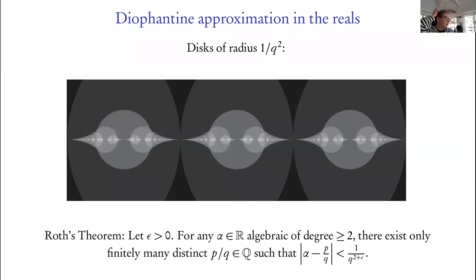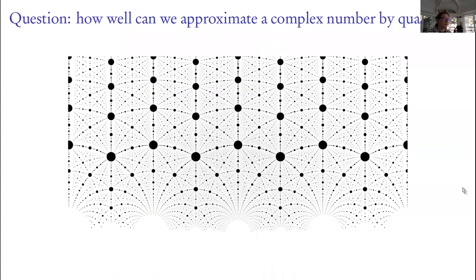Then there's Roth's theorem: asking what happens if you slightly decrease the size of the disks, increasing the exponent — asking for a tighter approximation. Then algebraic numbers end up having only finitely many approximations, lying under only finitely many disks. We can revisit these classical questions in this picture.